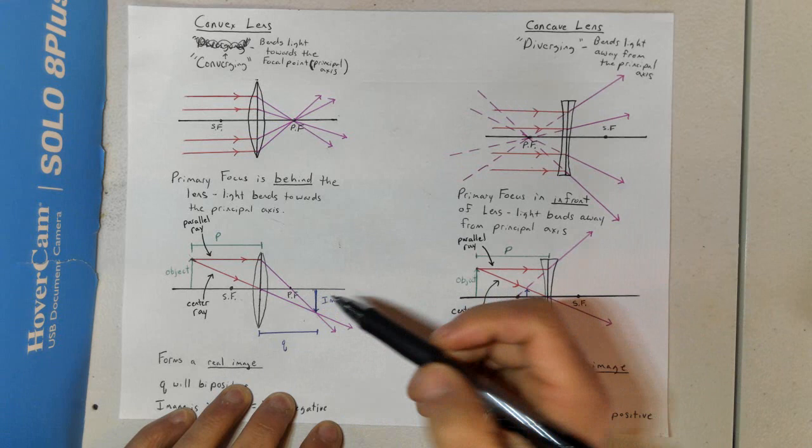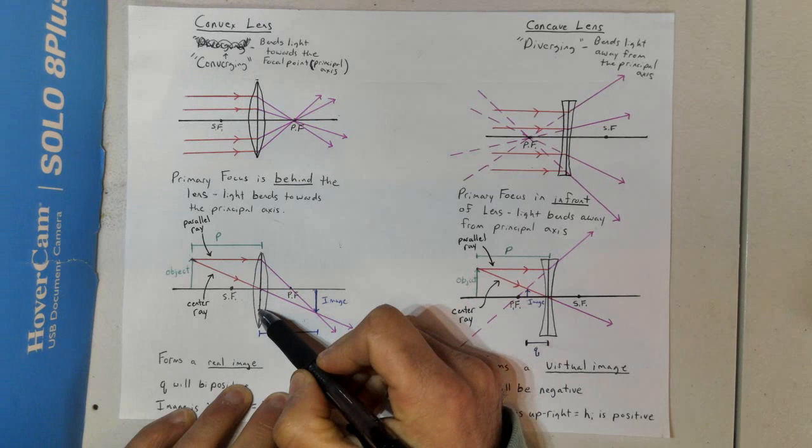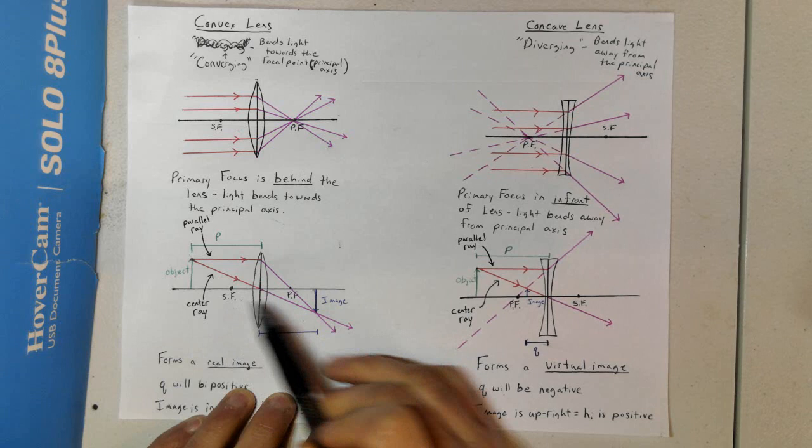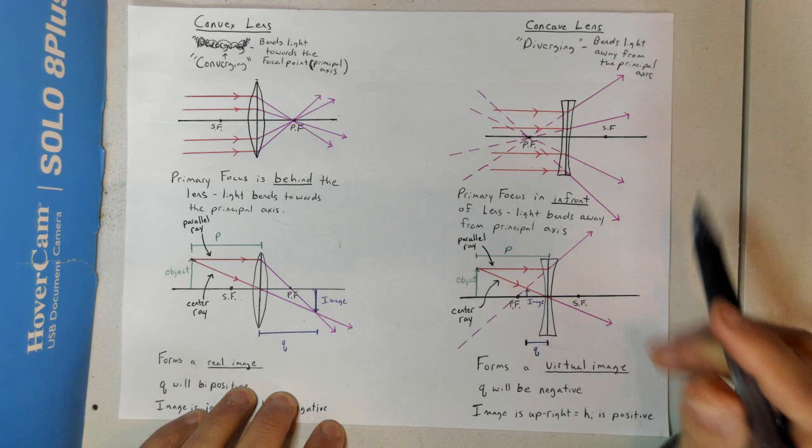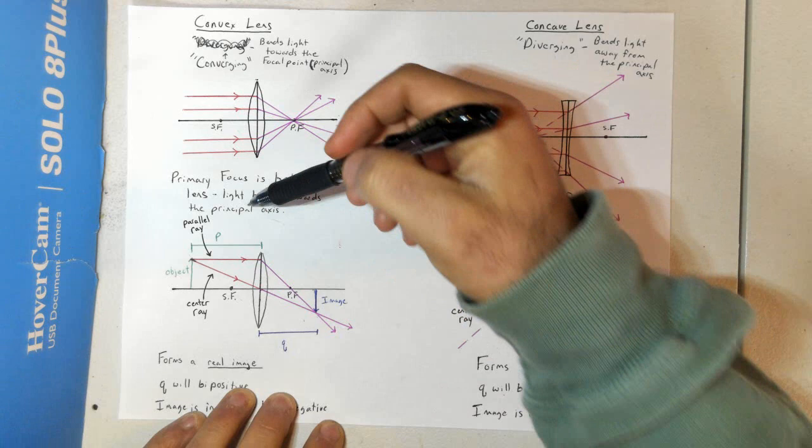There is technically a third ray that goes through the secondary focus, hits the line of action, and goes parallel to it. But that's a little harder to draw if you don't measure your exact focal points, so we're just going to leave that alone and keep it simple with our parallel and center ray.